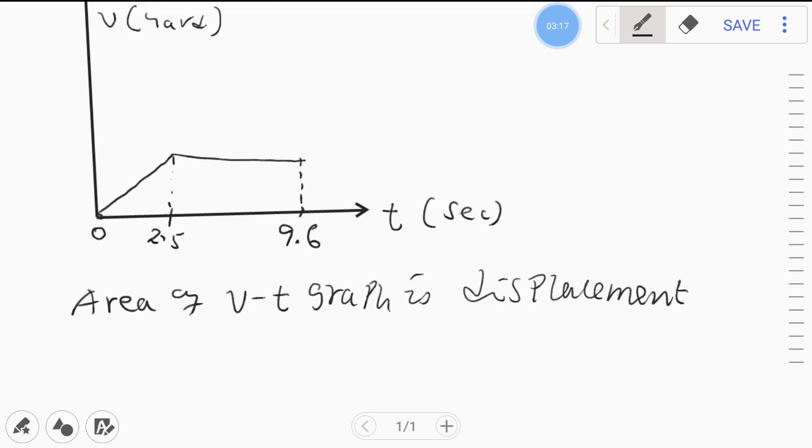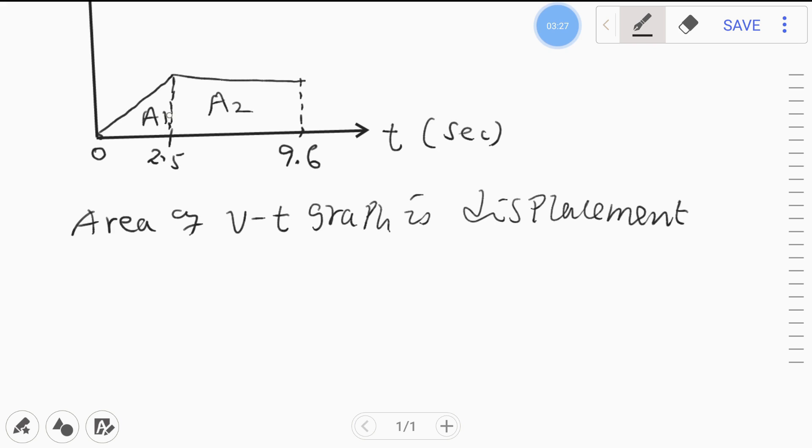So we have two areas now. The first area is a triangular area, area 1, and the second one is a rectangular area. Once we calculate these areas we'll sum them up to get the total area. Once we get that total area we can correlate that to the displacement.